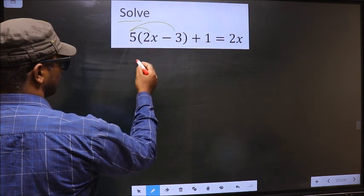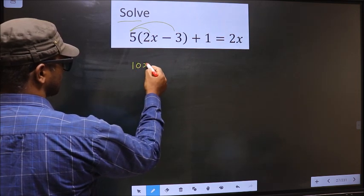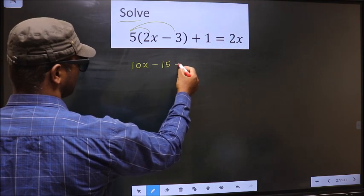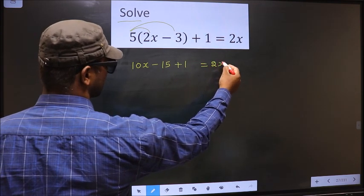That is 5 into 2x is 10x minus 5 into 3 is 15 plus 1 equal to 2x.